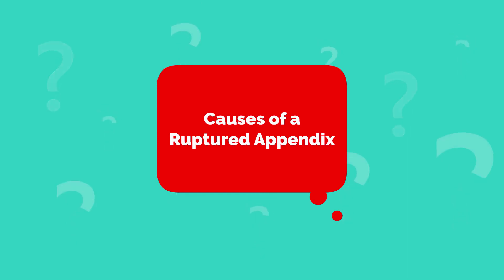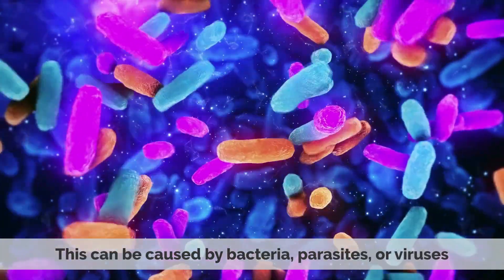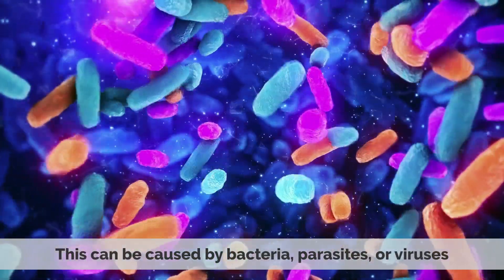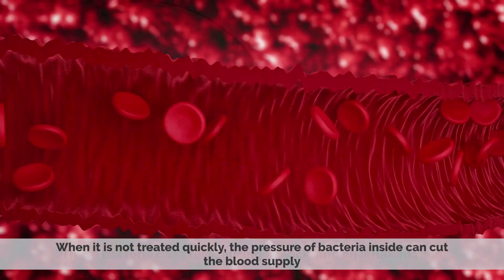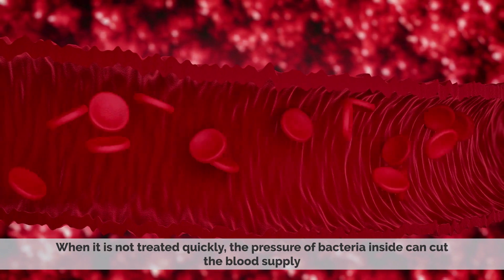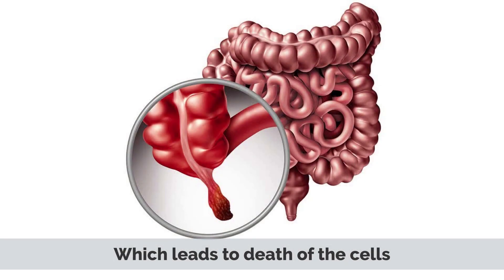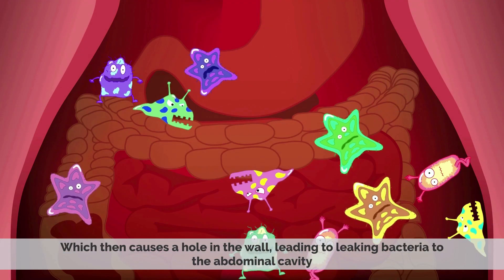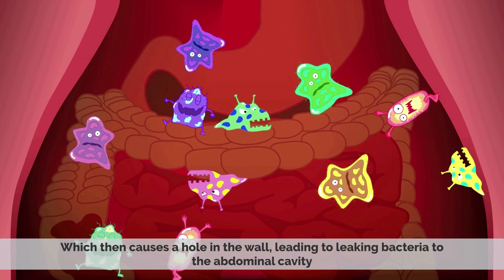Causes of a ruptured appendix. The most common cause of a ruptured appendix is an infection of the appendix. This can be caused by bacteria, parasites, or viruses. These bacteria can grow, causing a blockage and inflammation. When it is not treated quickly, the pressure of bacteria inside can cut the blood supply, which leads to death of the cells, which then causes a hole in the wall, leading to leaking bacteria into the abdominal cavity.